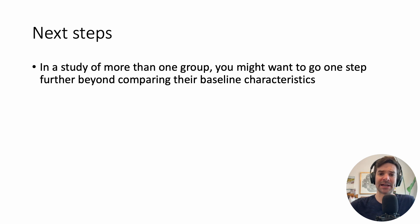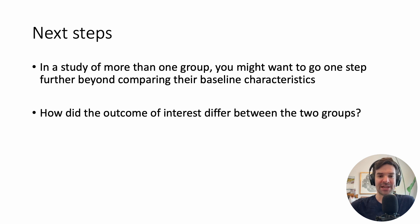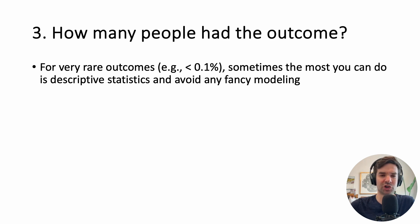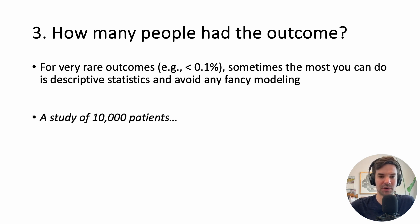Next steps: you might want to go beyond comparing baseline characteristics to examining how the outcome of interest differs between groups — maybe the outcome was death, or number of cars sold. A key pearl: if your outcome is rare, like less than 0.1%, you usually just want descriptive statistics and should avoid fancy modeling because you have no statistical power.